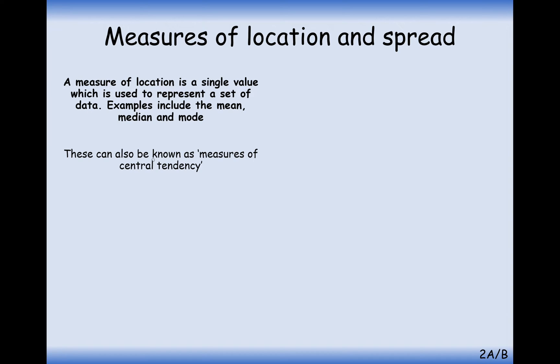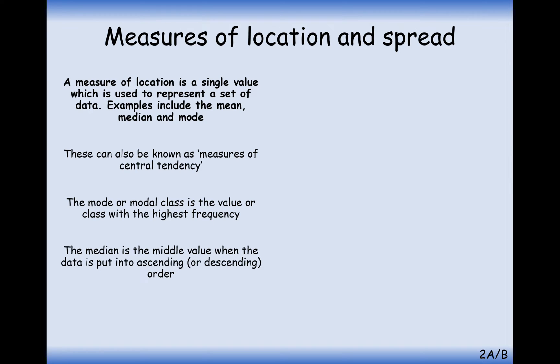So these types of measures are called measures of central tendency. It's where our data is roughly, how we can represent our data just using one value to represent the whole group of data. We've got the mode, which is the highest frequency piece of data. The median is the middle value when we put them into ascending order. And the mean is when we calculate all of them added up, divided by how many there are.